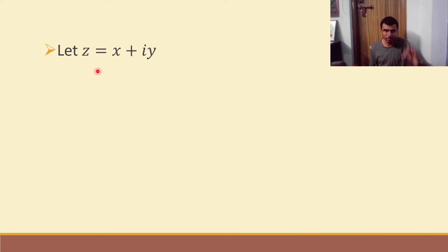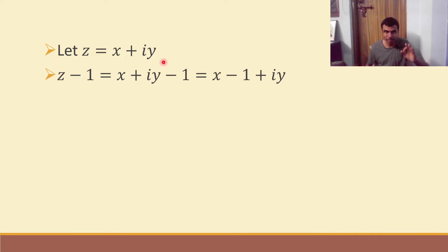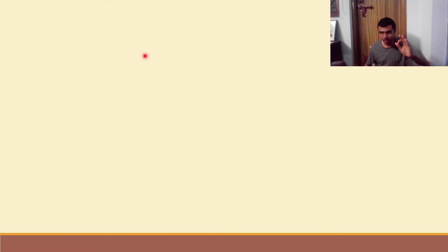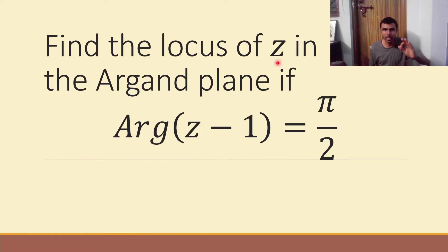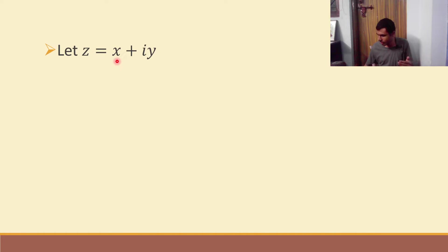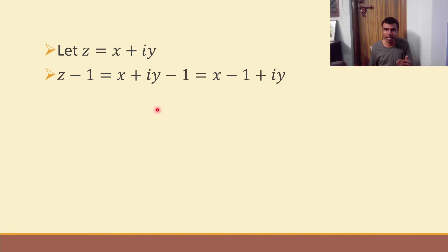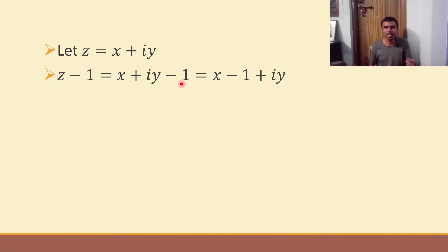I am taking z as x plus i y. Now, the complex number here is not z — it is z minus 1. So let us find out z minus 1. z is x plus i y, so z minus 1 is x plus i y minus 1. Let us bring the real part together: x minus 1 plus i y.